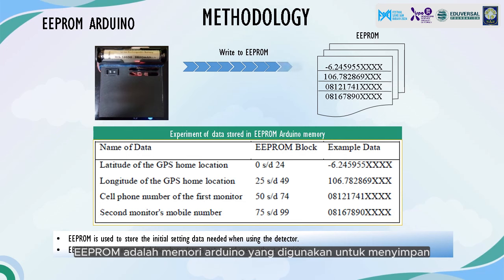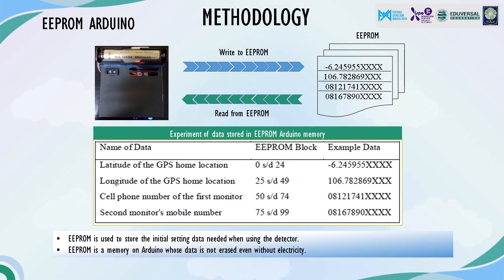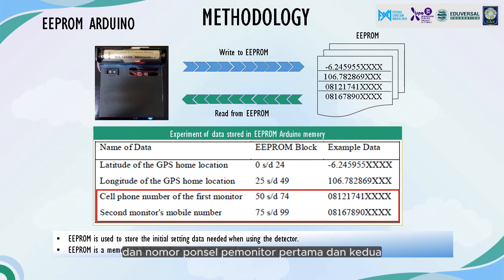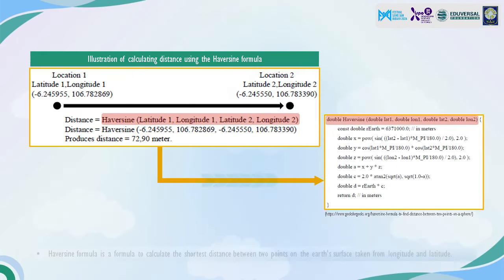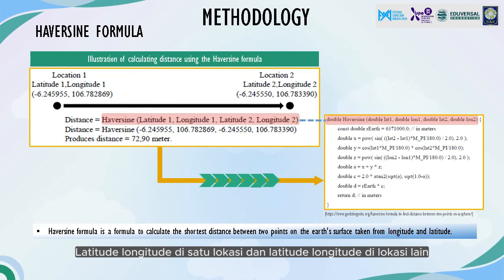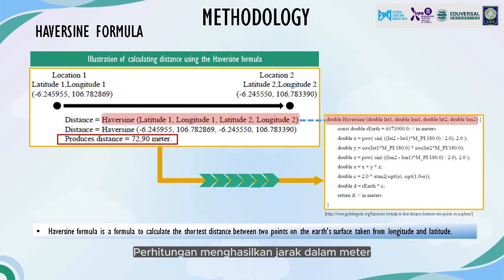EEPROM is a memory on Arduino used to store the initial setting data of the detector. The data stored includes latitude and longitude coordinates of the initial location, and the cell phone numbers of the first and second monitors. The Haversine formula is used to calculate the distance between two coordinates — the latitude and longitude at one location versus another location.